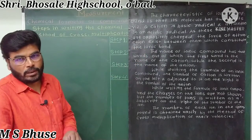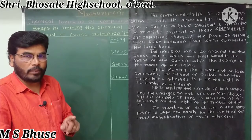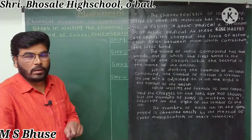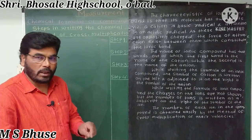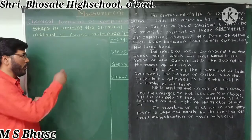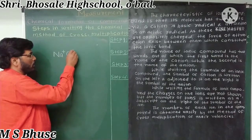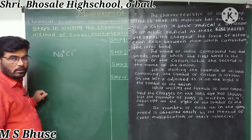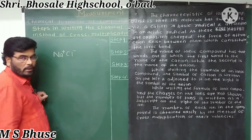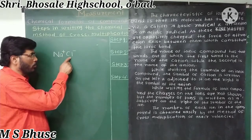The characteristic of an ionic compound is that it has two parts. The first part is the cation — a positively charged ion, which we call the basic radical. The second part is the anion — a negatively charged ion, which we call the acidic radical. For example, sodium chloride is an ionic compound and its molecule is Na⁺Cl⁻, consisting of sodium as the cation and chloride as the anion.